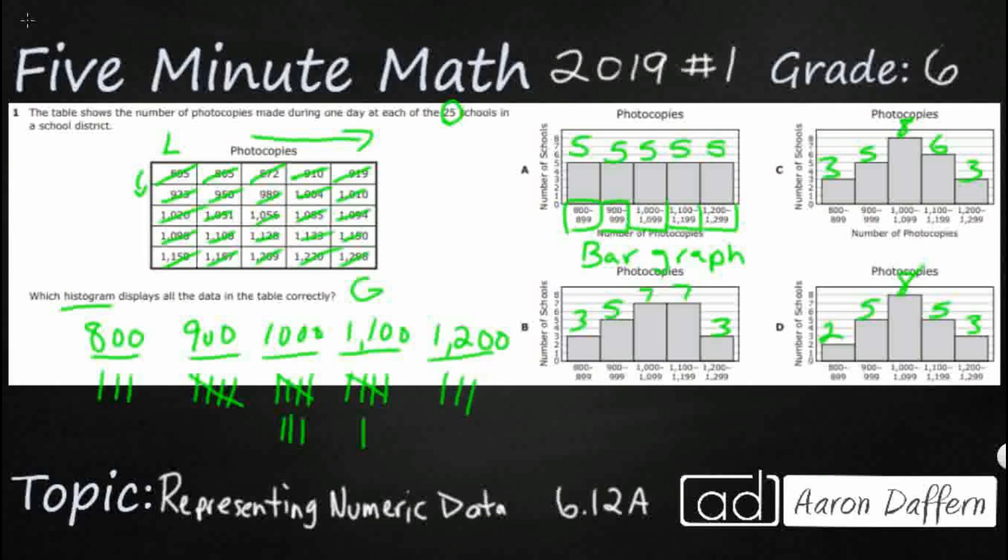Looking at our answer selections, you can see that we've got 3 in the 800s. So this one's not going to work. That's possible, that's possible, and D doesn't work. My 900s is 5, so that's possible and that's possible. My 1000s is 8, so that one's not going to work. Let's double check - we've got 6 and 3. Check and check. My answer is C.